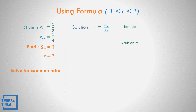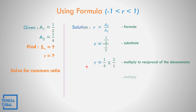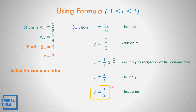The formula is second term divided by the first term. So, let us substitute. The second term is equal to 1 fourth, and the first term is equal to 1 half. To solve for r, get the reciprocal of the denominator. Copy the numerator 1 fourth, get the reciprocal of the denominator: 2 over 1, or equal to 2. Multiply the numerator: 1 times 2 is 2. The denominator: 4 times 1 is equal to 4. Then get the lowest term — divide numerator and denominator by 2. So 2 divided by 2 is 1, and 4 divided by 2 is 2. The common ratio is equal to 1 half.